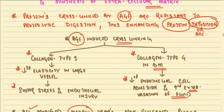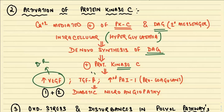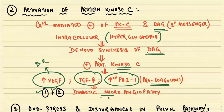The second important pathogenesis mechanism is activation of protein kinase C. Intracellular hyperglycemia leads to de novo synthesis of diacylglycerol, which stimulates protein kinase C. This increases VEGF — responsible for diabetic retinopathy — TGF-beta, and plasminogen activator inhibitor-1, which inhibits fibrinolysis, inducing a procoagulant state. All these factors lead to diabetic microangiopathy.